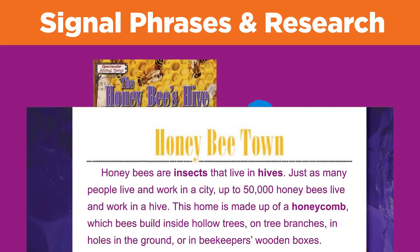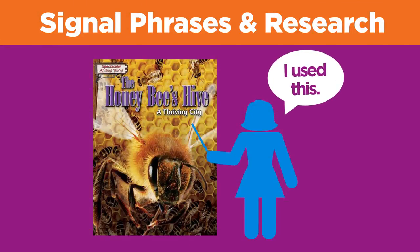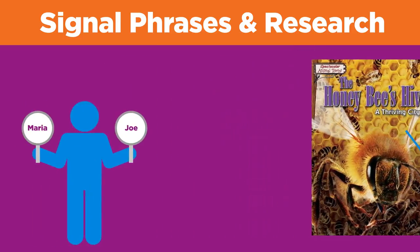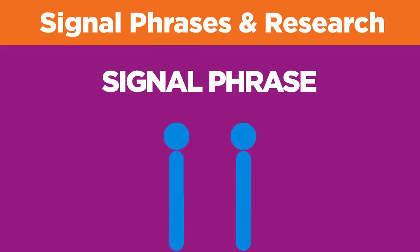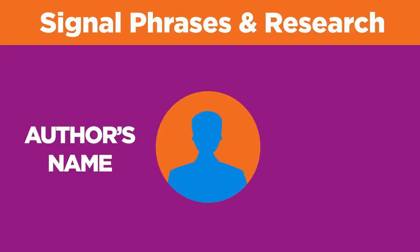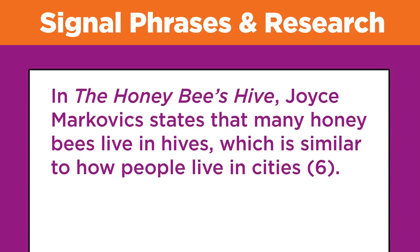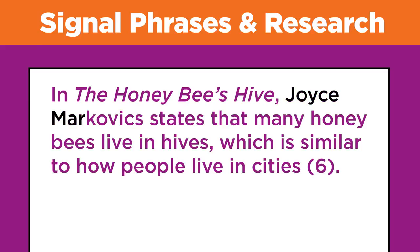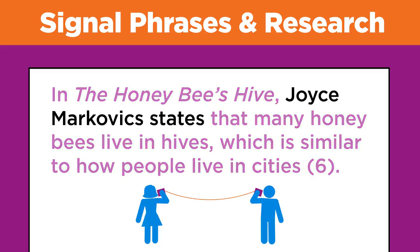If you were to use Markovic's ideas in any way, you would need to give the author credit. The easiest, most direct way to do that is to use a signal phrase. Usually, the signal phrase is used for the first time a source is introduced. It includes the author's name and the title of the work. In this example, notice the phrase 'Joyce Markovic states.' Similar to our earlier conversation between Maria and Joe, this phrase signals that the idea belongs to Markovic.